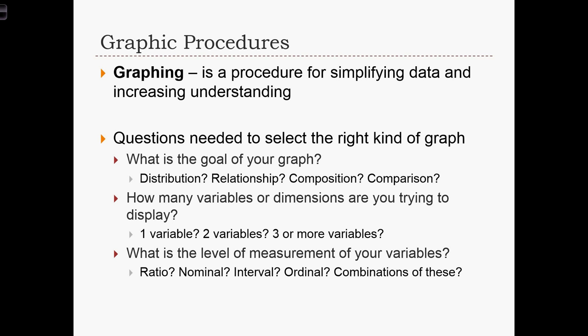Another thing to think about is how many variables are we using in our graph. Are we just doing a univariate graph, meaning we only have one variable, or do we have a bivariate, trivariate, or multivariate graph? Another thing to consider is the level of measurement of each variable that we're trying to graph. Ratio measured variables are amenable to many different types of graphs, but ordinal or nominal data really limit which graphs we are able to use.